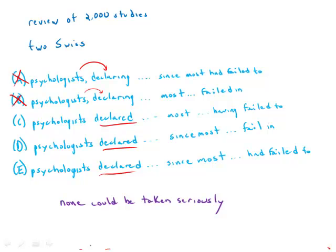In answer choice C, we repeat the same mistake with the phrase 'most of the studies.' Most of the studies are not followed by a verb either — they're also followed by a participle phrase, 'having failed.' We're repeating that same kind of mistake in another part of the sentence. That is something that often appears in sentence correction answer choices: the same mistake in a different part of the sentence. Answer C is out.